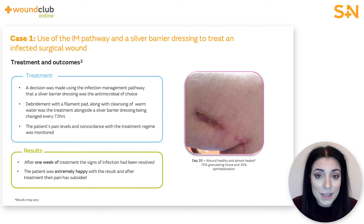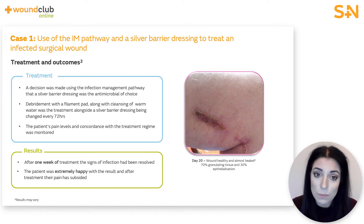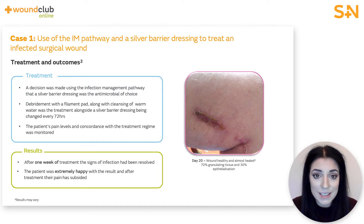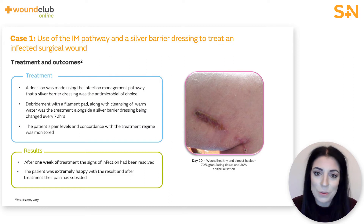The clinician completed a follow-up assessment after 20 days, at which stage the wound had reduced in size by 50 millimetres in length and 10 millimetres in width with no wound bed depth. The wound bed was healthy and almost healed, with 70% granulating tissue and 30% epithelialisation present with low levels of exudate. Patient comfort was noted to be excellent during the wear time of the silver dressing and the patient's pain had fully resolved.